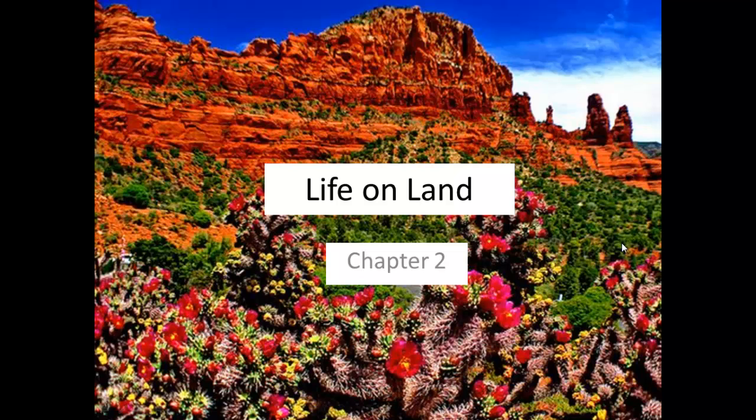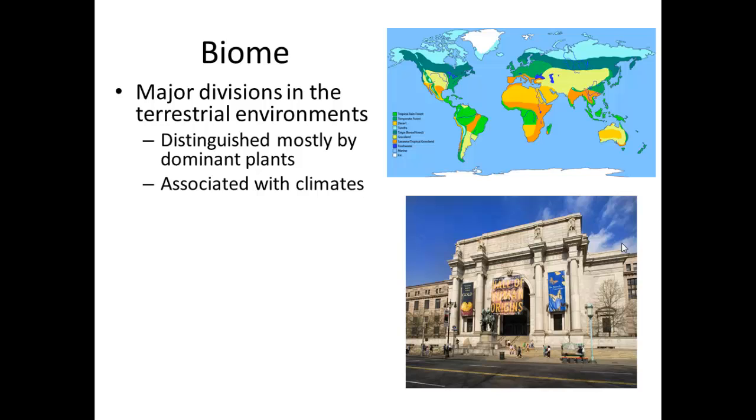Welcome to our first chapter, your first video lecture. We're going over chapter two, which is life on land. We're mostly going to discuss the abiotic factors which contribute to what is called a biome. A biome is a major division in the terrestrial environment, so we are ignoring the aquatic and oceanic environments at this point, and is distinguished mostly by the dominant plant of that area.